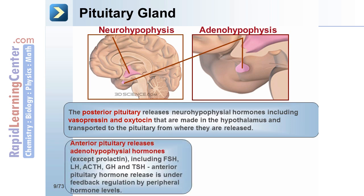With the exception of prolactin, the anterior pituitary releases adenohypophysial hormones, including FSH, LH, ACTH, GH, and TSH. The function of the anterior pituitary is under regulation by the hypothalamus, and anterior pituitary hormone release is under feedback regulation by peripheral hormone levels.